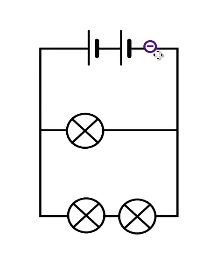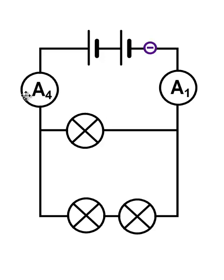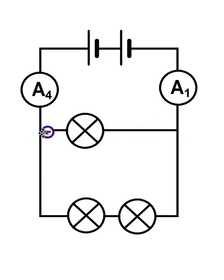To measure the current in this parallel circuit we're going to use ammeters, so I'm going to put an ammeter in the circuit here and another ammeter in the circuit here. Now, when this electron flows around the circuit and reaches a branch, it has to make a choice: does it go through the middle branch or does it go through the lower branch?